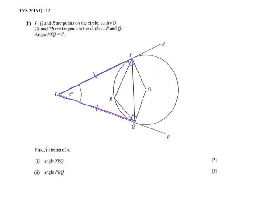We can see a couple of features here: we can have a quadrilateral, or we can also have an isosceles triangle. Depending on what we need to find. The first part of the question tells me that angle PTQ is X. Find in terms of X the angle TPQ. In this case, triangle TPQ is isosceles. Therefore, angle TPQ = (180 minus X) divided by 2.